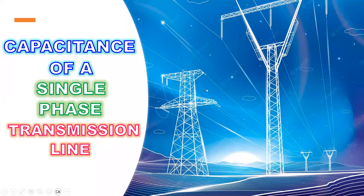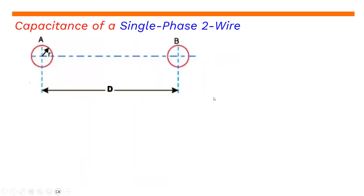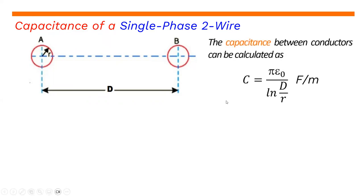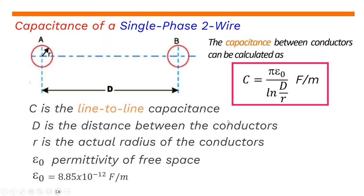Now we're going to discuss the capacitance of a single-phase transmission line. We assume we have two conductors with radius r, separated by distance d. The line-to-line capacitance can be calculated as C equals pi times epsilon zero over the natural logarithm of d over r, in farads per meter.